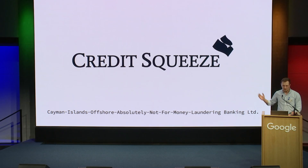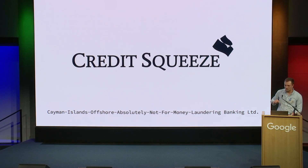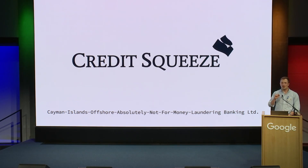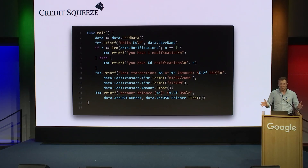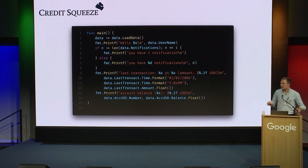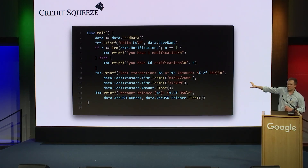In order to demonstrate a somewhat realistic example of internationalization where it would actually make sense in Go, I founded this wonderful bank registered under the name Credit Squeeze. And in order to save money, I decided this bank is only going to be accessible via CLI. In fact, it's all open source, and this is the source.